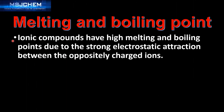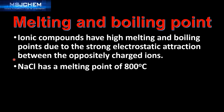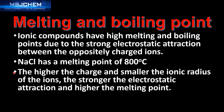Ionic compounds have high melting and boiling points due to the strong electrostatic attraction between the oppositely charged ions. For example, sodium chloride has a melting point of 800 degrees C. The higher the charge and smaller the ionic radius of the ions, the stronger the electrostatic attraction and the higher the melting point.